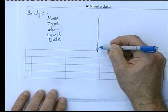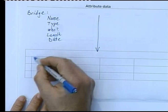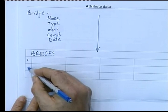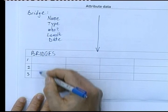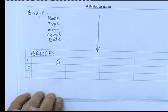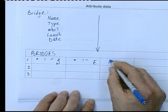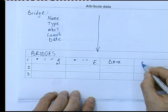In your GIS you will have an attribute table. We're going to call this the attribute table for bridges, with bridge one, bridge two, bridge three, and so on. For instance, our first bridge will have a geographic coordinate — south and east, in degrees, minutes, and seconds — so we know the position of the bridge. Then we would add the date the bridge was built, and who built it — the company — et cetera.